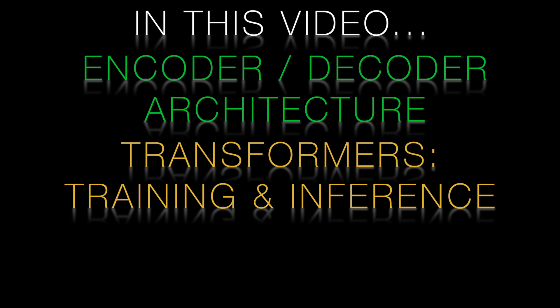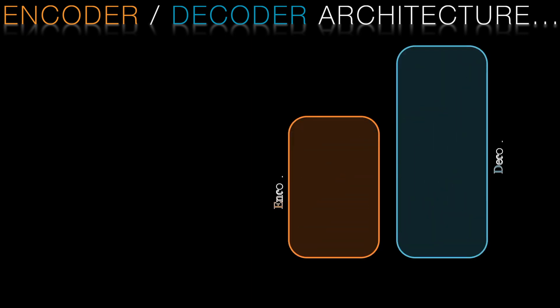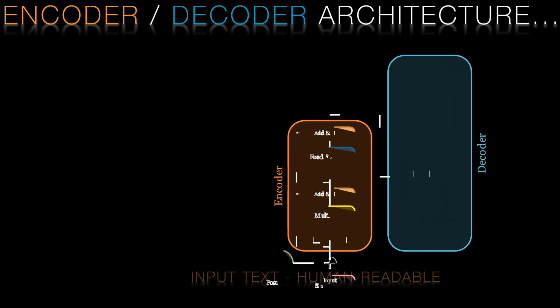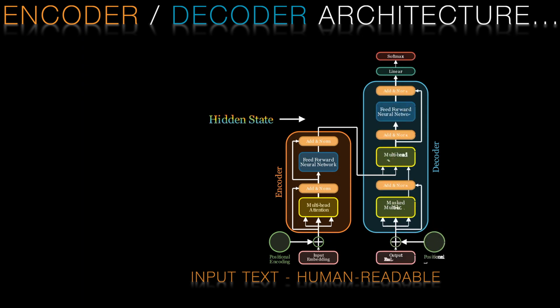This will lead to a discussion of why we have something called masked attention and what the mask does. Transformers consist of two main components: the encoder and the decoder. The encoder takes in the input data and transforms it into a compact low dimensional representation called the hidden state. The decoder then takes this hidden state and produces the final output.